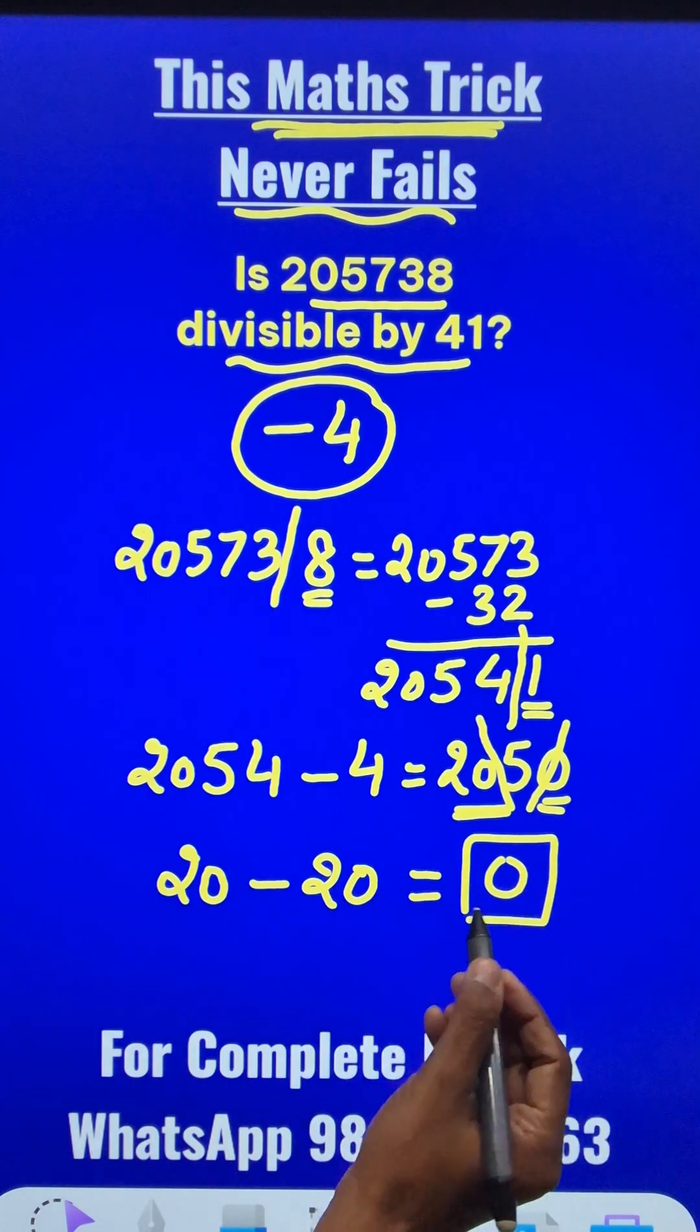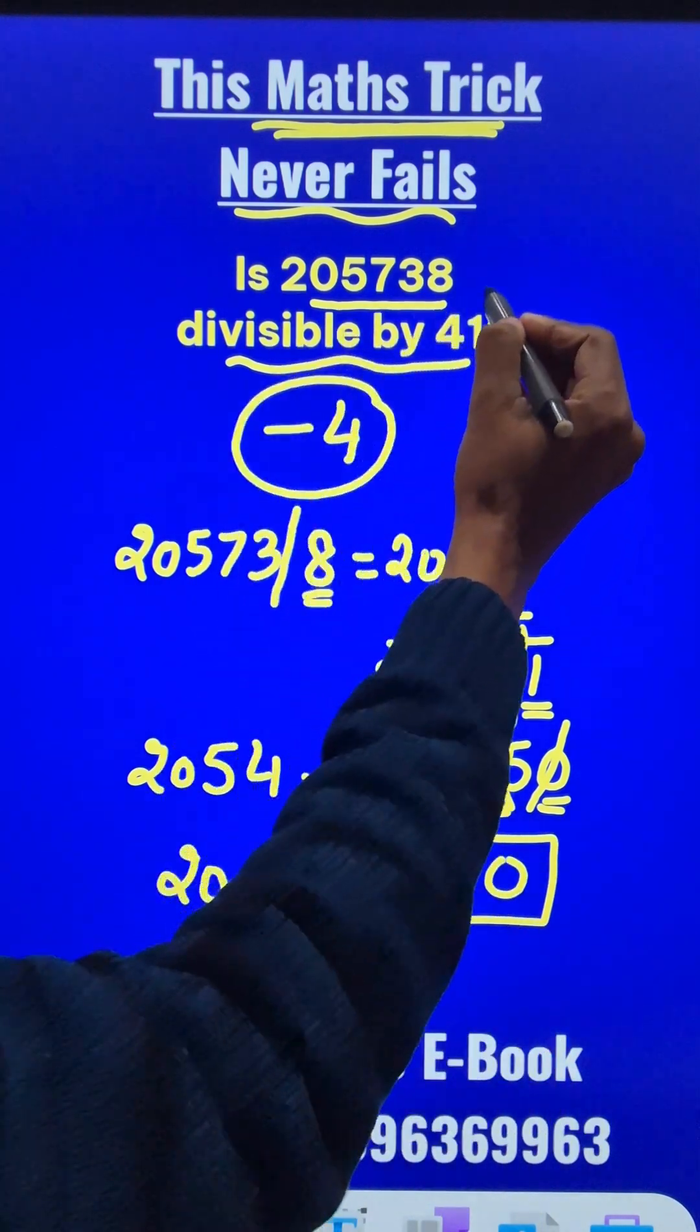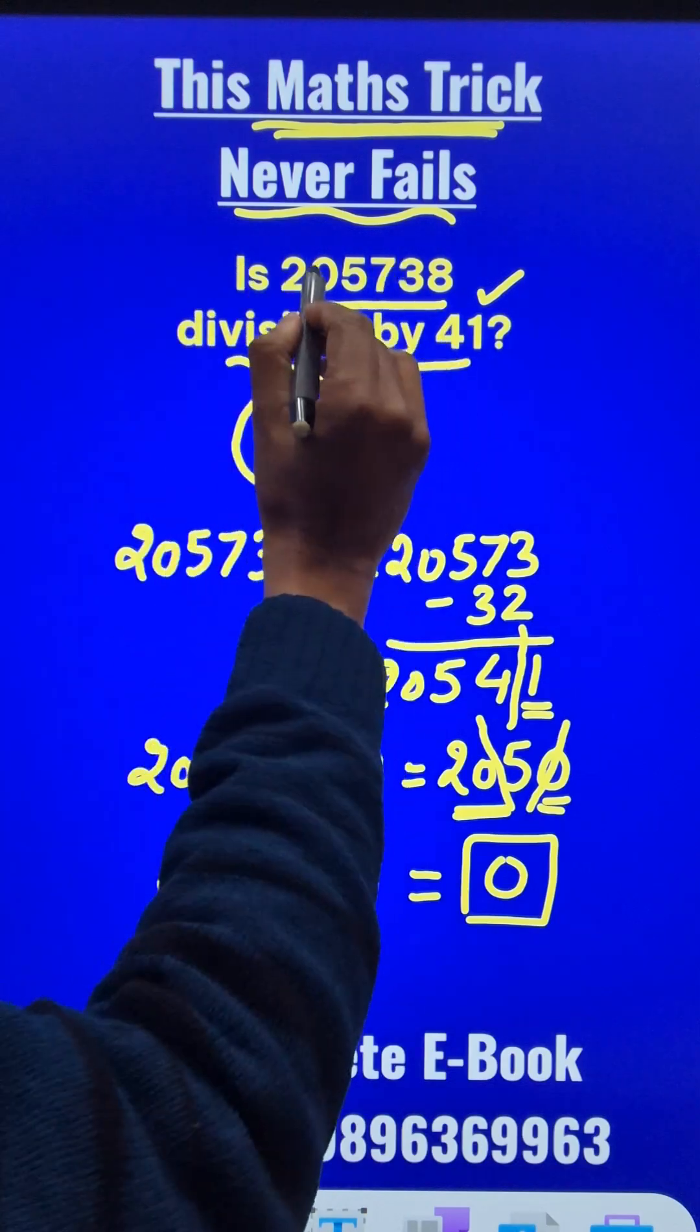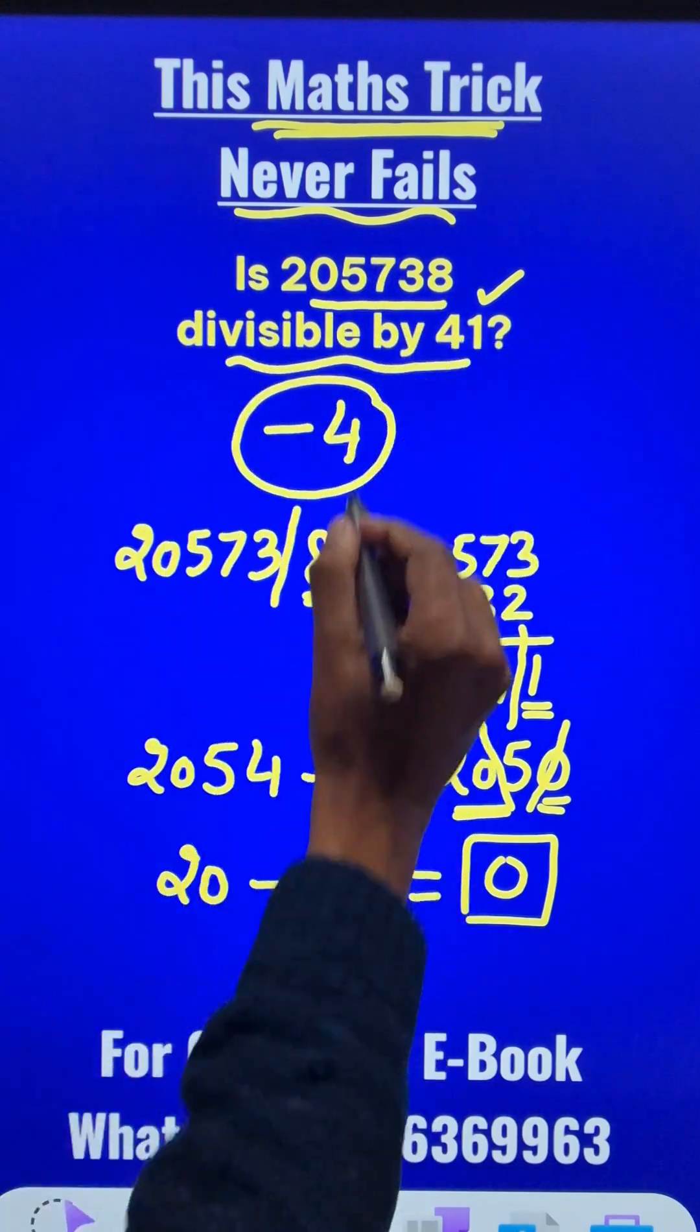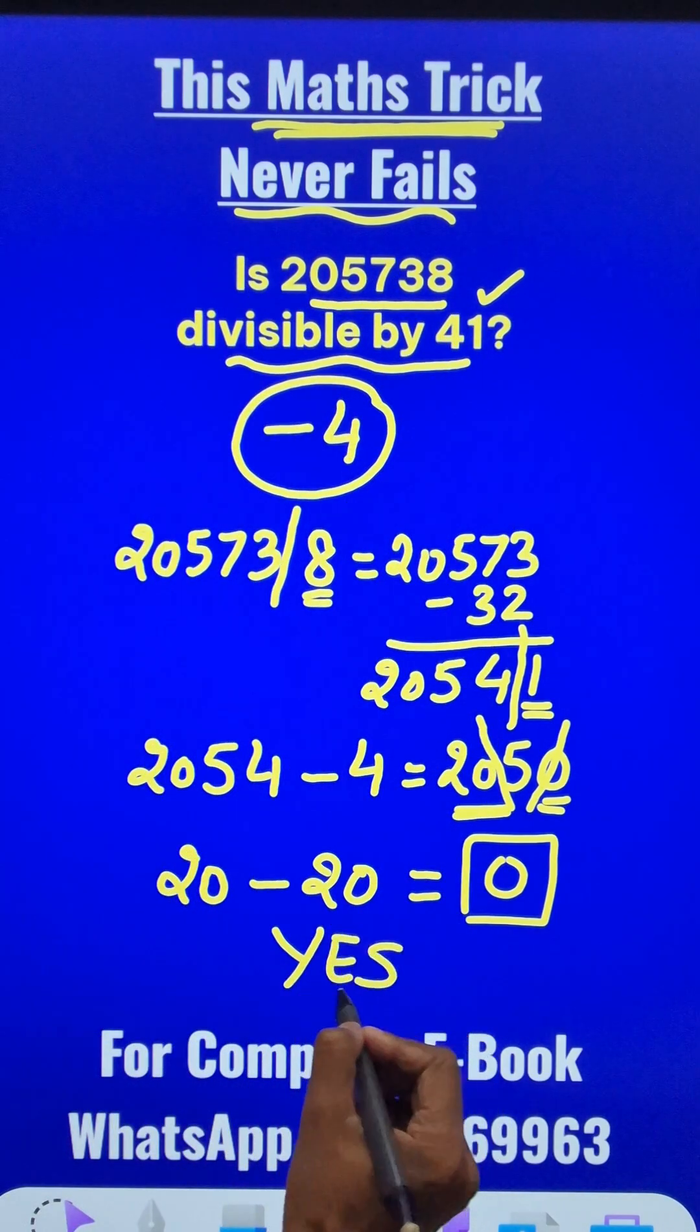And whenever I reach 0 or a multiple of 41, the entire number 205738, is it divisible by 41? Yes, it is divisible by 41.